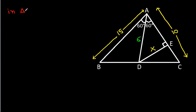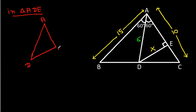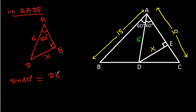Now in triangle ADE, we have AD is 6, DE is X, the angle DEA is 90 degrees, and angle DAE is 60 degrees. So sin 60 degrees equals DE over AD, and sin 60 degrees is root 3 over 2, which equals X over 6.